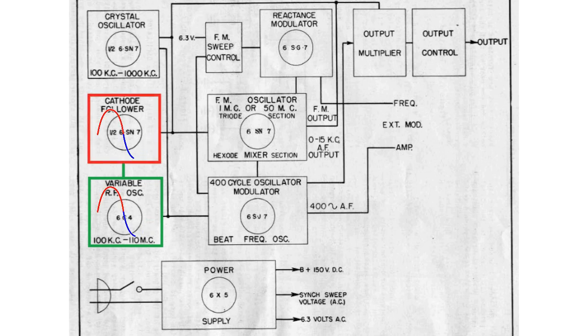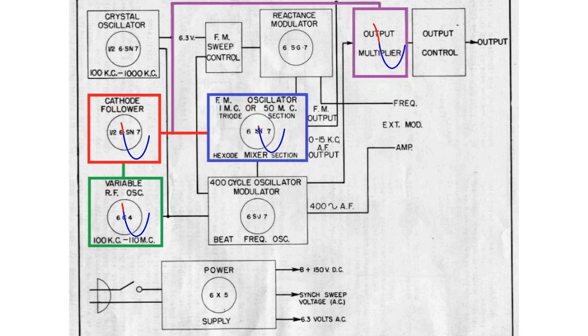As well, the signal coming out of the cathode follower is largely distortion free and of course in phase with the signal coming from the RF oscillator.